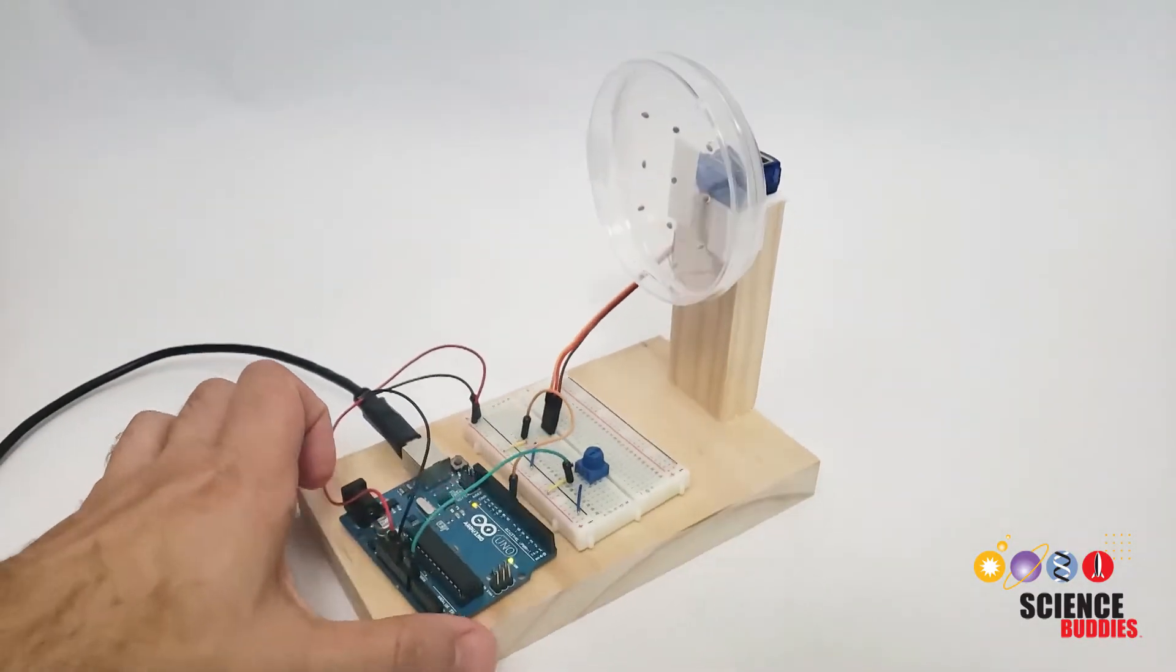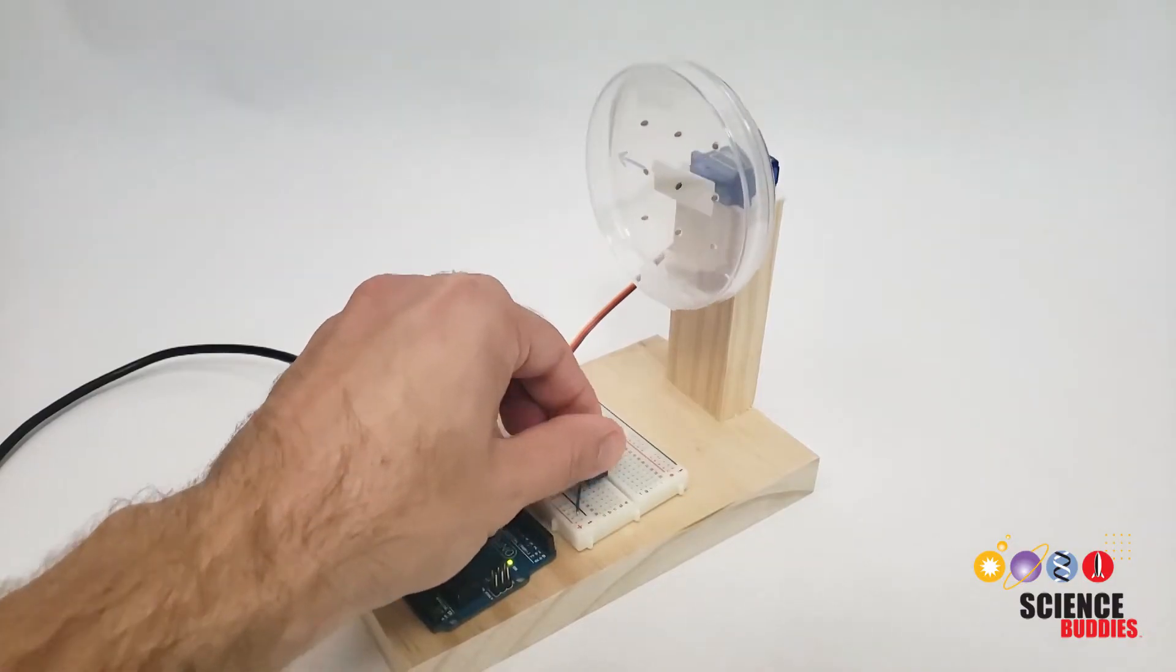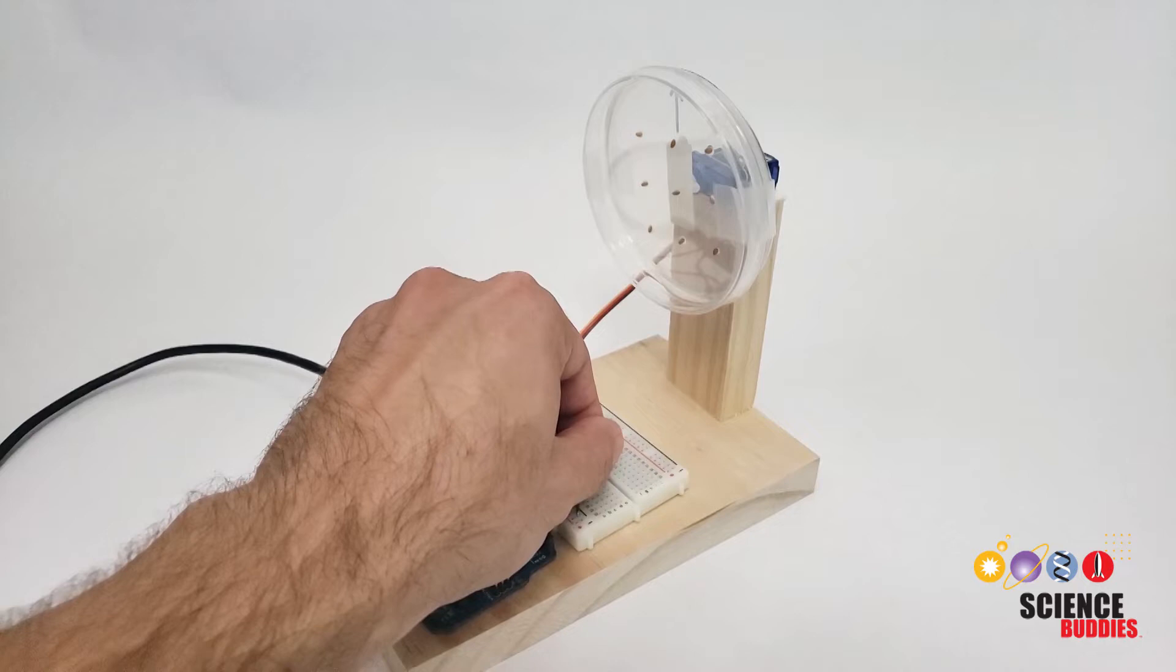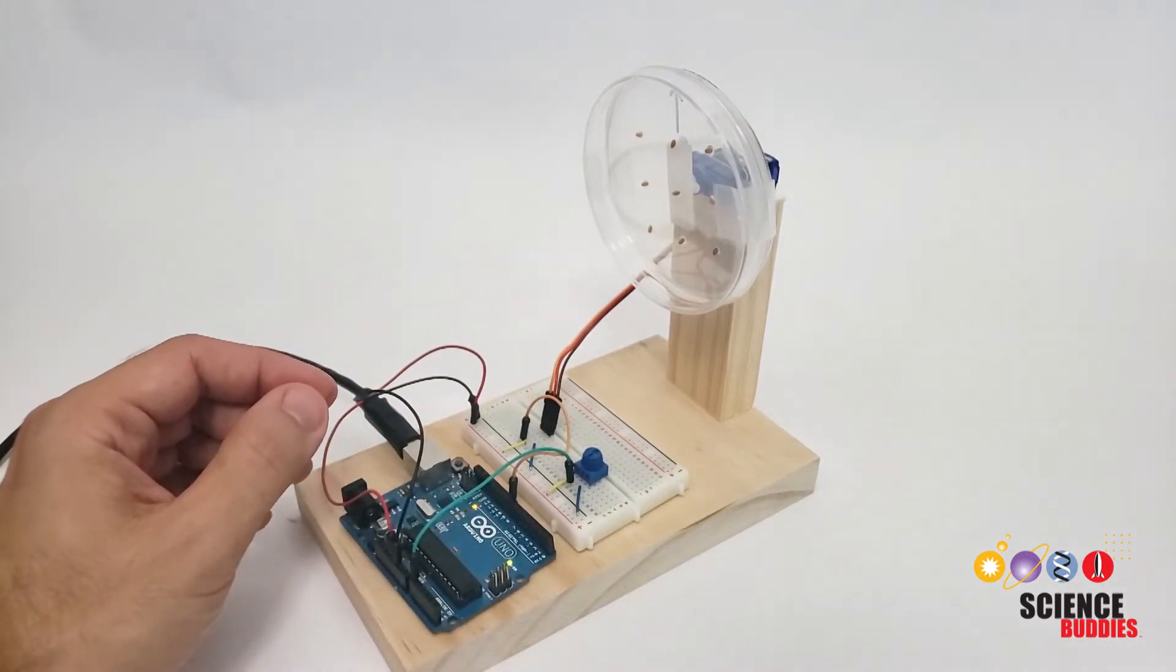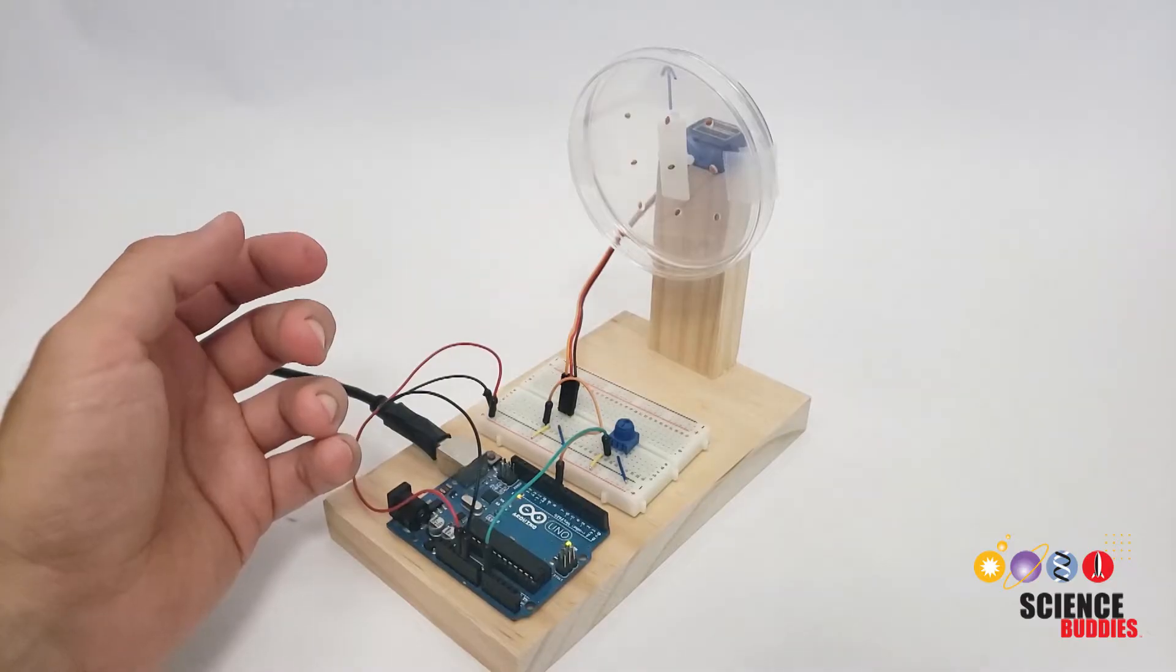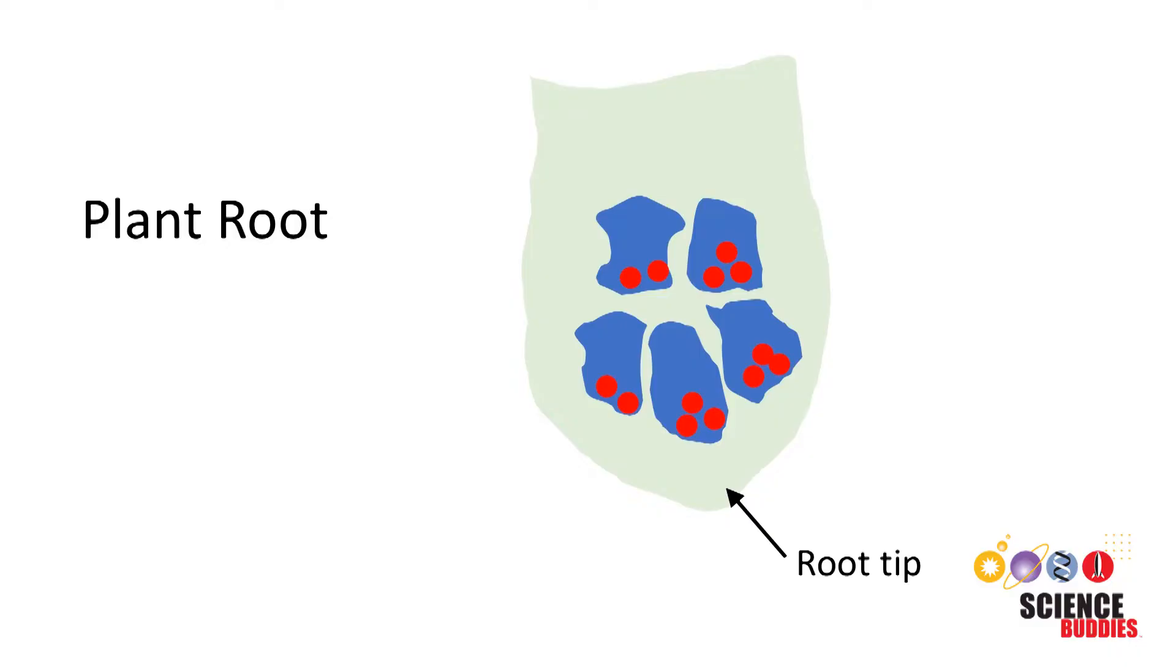This allows you to rotate the seeds continuously in the vertical plane, so as far as the seeds are concerned, the direction of gravity is constantly changing. This continuous rotation confuses the seed's gravitropic response as they germinate. Plants have a special sensing ability in their cells that effectively tells them which way gravity is pointing, and normally this allows their roots to grow down.